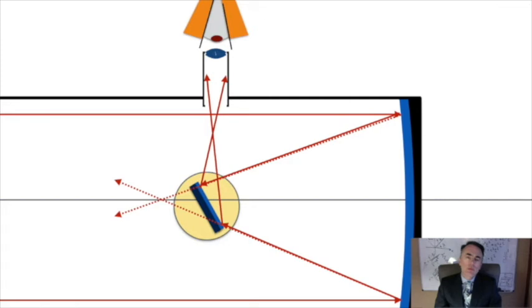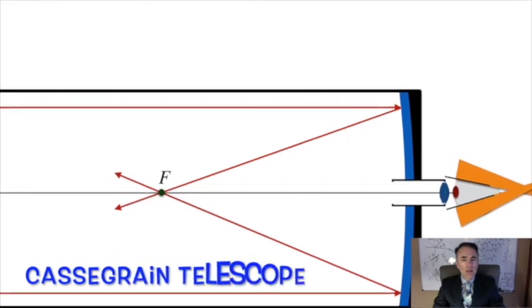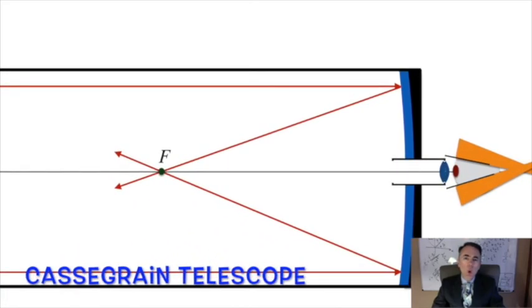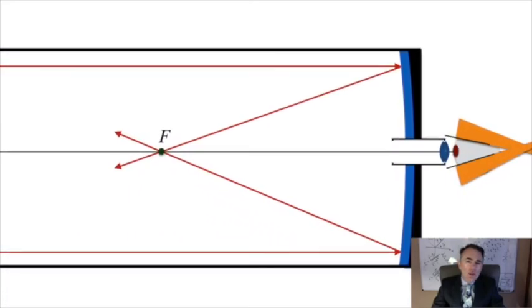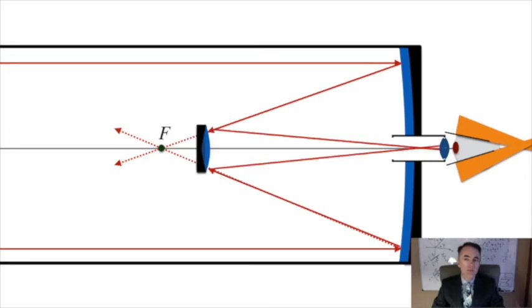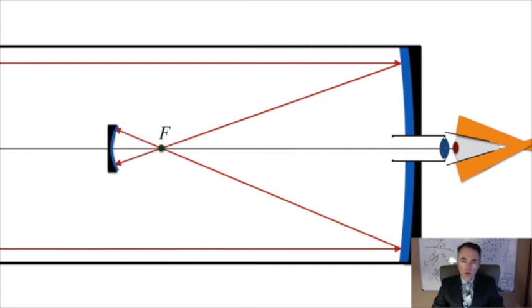Another telescope that uses mirrors to converge light are the Cassegrain telescopes. Here, there is a hole in the main hyperboloidally curved mirror, and the secondary mirror is also curved. We can use a convex or a concave mirror as the secondary mirror.